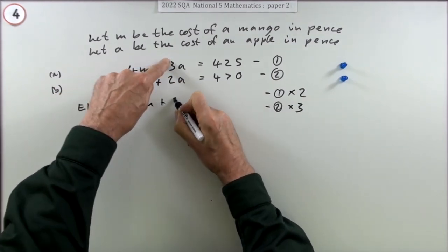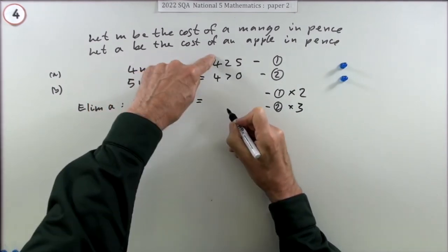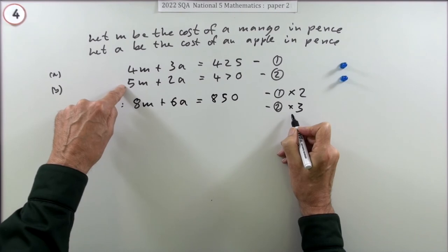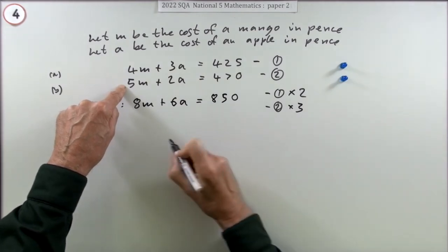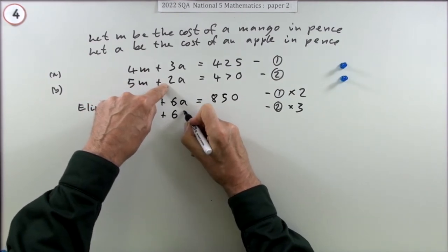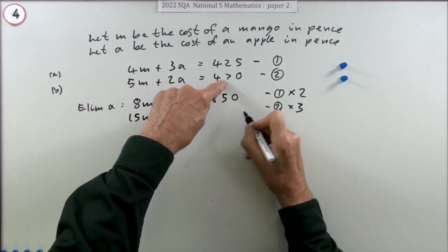Double everything: 2 times 4 is 8, 2 times 3 is 6, and double that will be 850. Tripling everything here: 3 times 5 is 15, 3 times 2 is 6, and three of them is 1410.